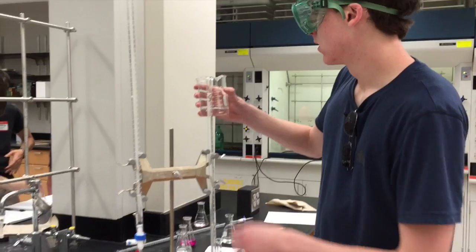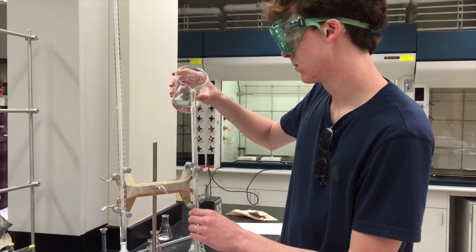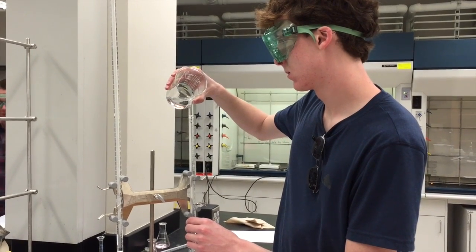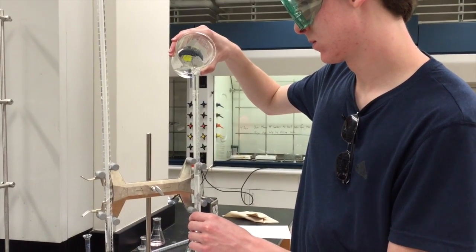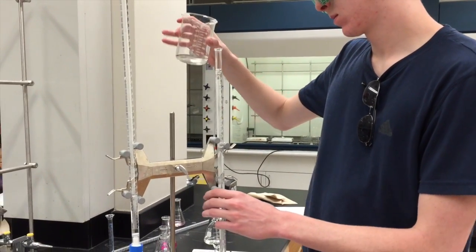Make sure the stopcock is in the horizontal position and pour in the sodium hydroxide with the burette below your head. Also be sure that there are no air bubbles at the tip of the burette.